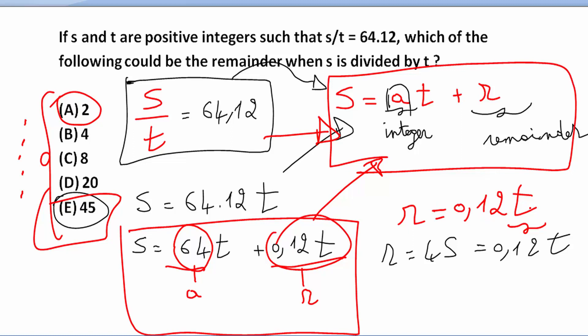So I have to try the answers to see which one will give me T as an integer. So R is equal to 0.12 T. I will replace R by the values here. And the one that gives me T as an integer is the correct answer. So the answer here is E.